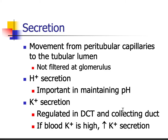Secretion is where you didn't get something into the filtrate in Bowman's capsule, but further down the line it's directly dumped into the filtrate from the blood. This happens with protons to maintain our pH, and also with potassium. The peritubular capillaries surrounding your nephron can dump things straight into the filtrate without being filtered in the glomerulus. Potassium secretion is primarily regulated in the distal convoluted tubule and the collecting duct — if blood potassium is high, secretion increases.